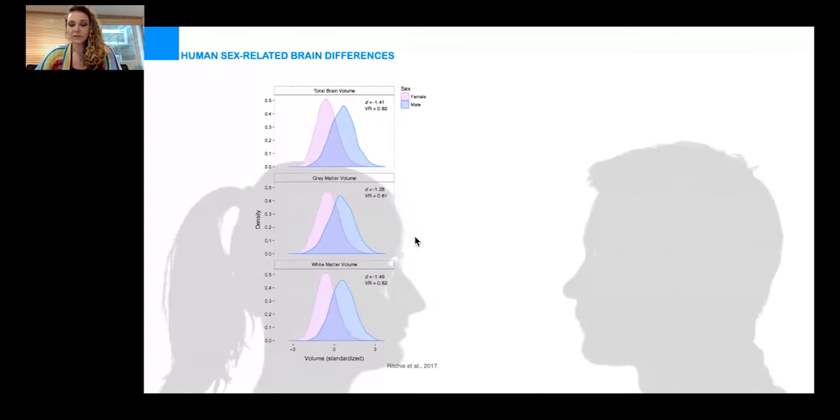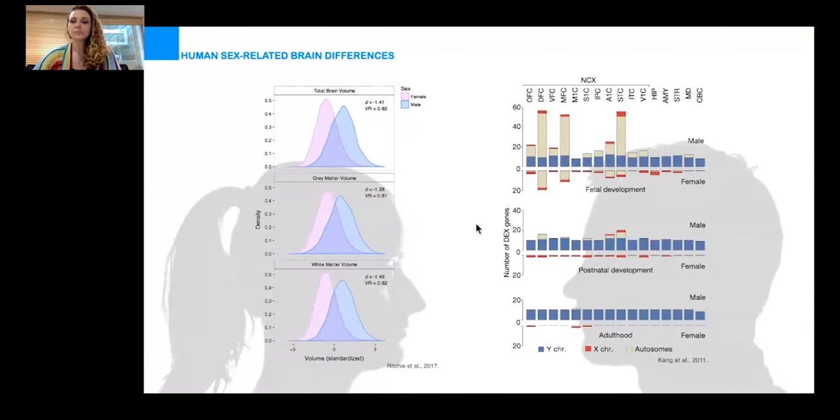Another indication of the embryonic origins of these differences are the gene expression patterns. This is the number of differentially expressed genes during fetal, postnatal development, and adulthood, and it is very obvious that the highest number of differentially expressed genes appears during fetal development in the neocortex, which is the part of the brain that we are actually interested in.